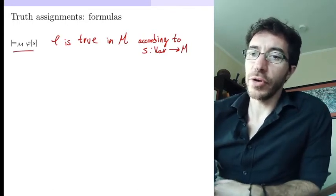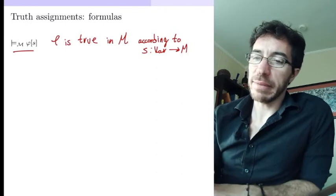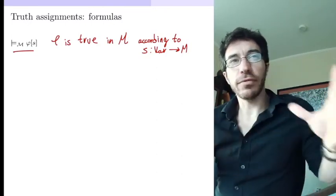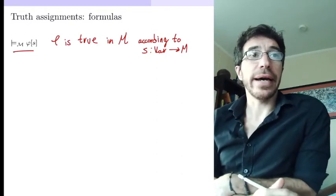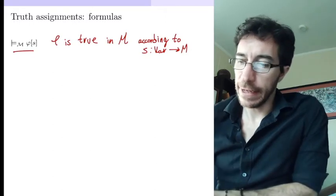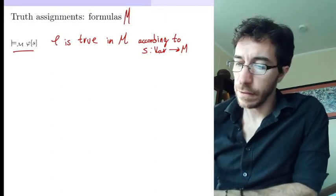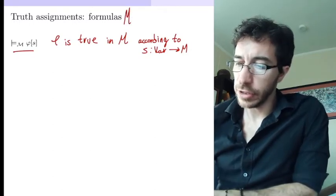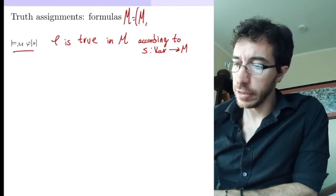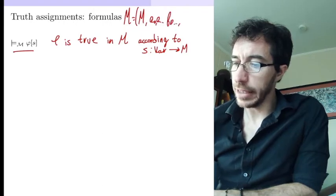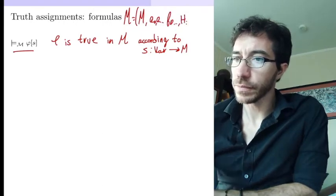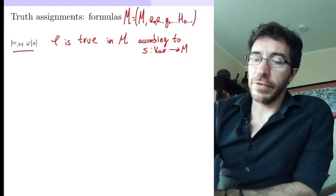So we are given a variable assignment, we're given a well-formed formula, and a structure M. M is given to us, and it contains the domain M, assignments for the constants, the functions, and the relations. And we want to define this notion of truth.